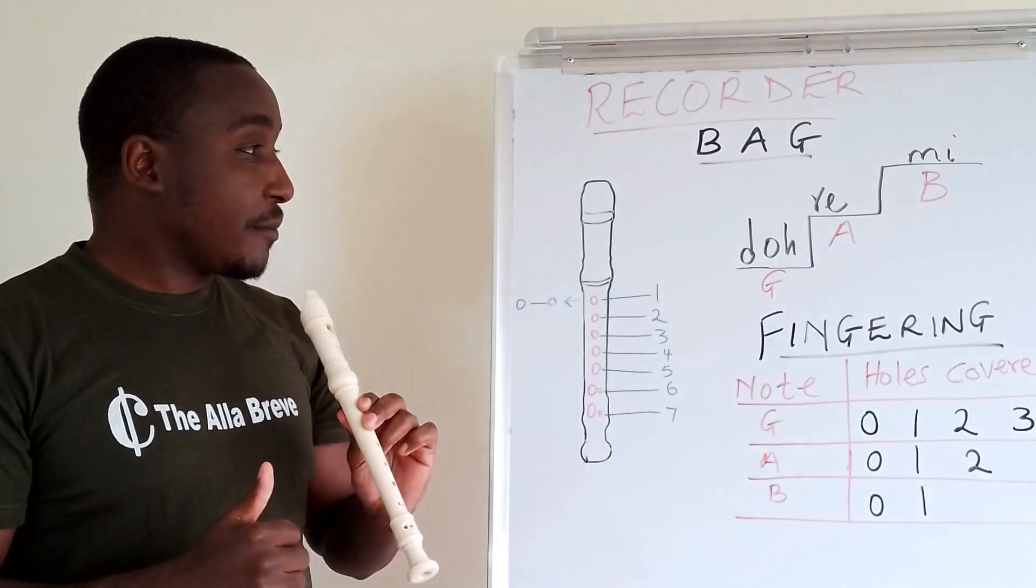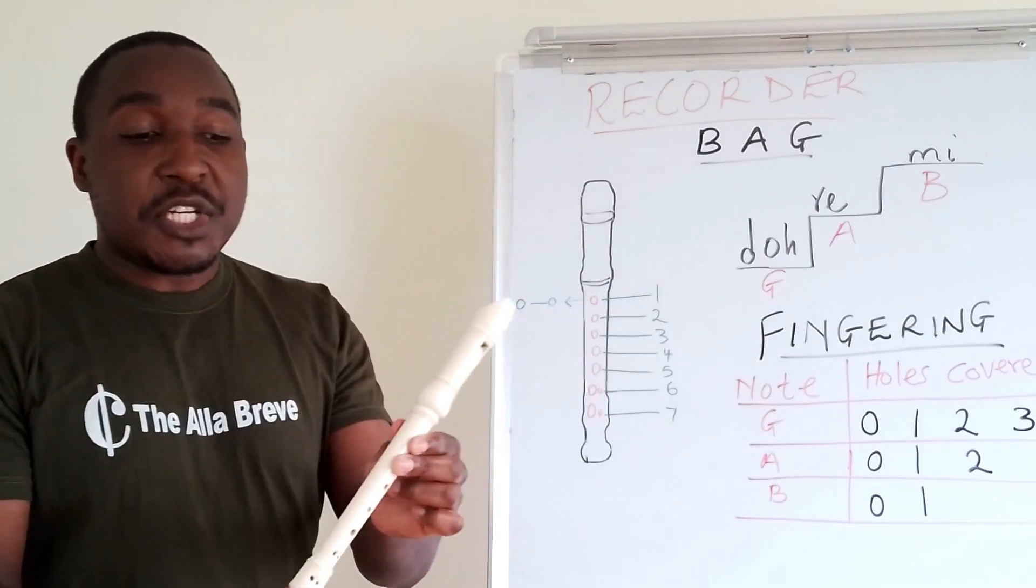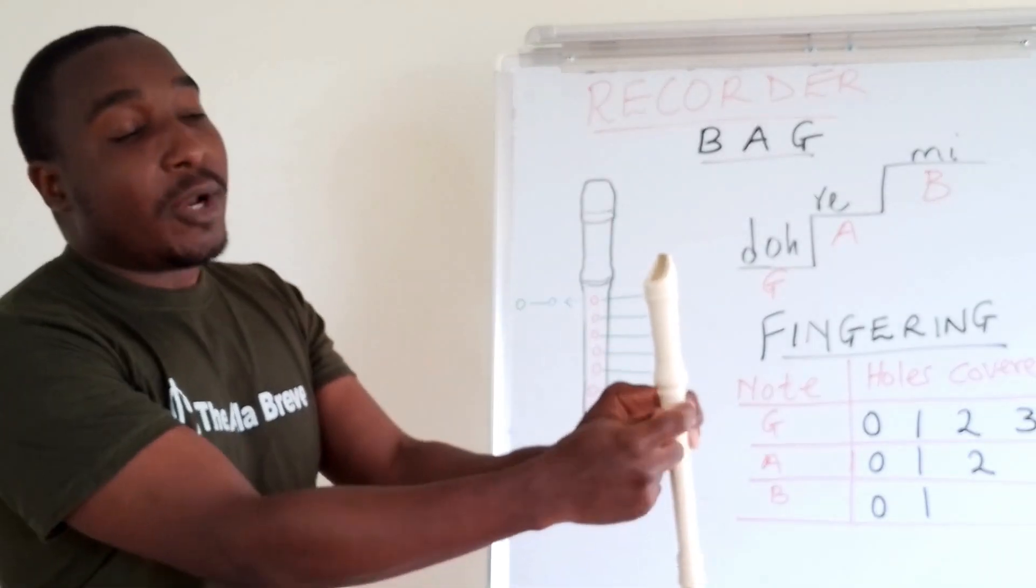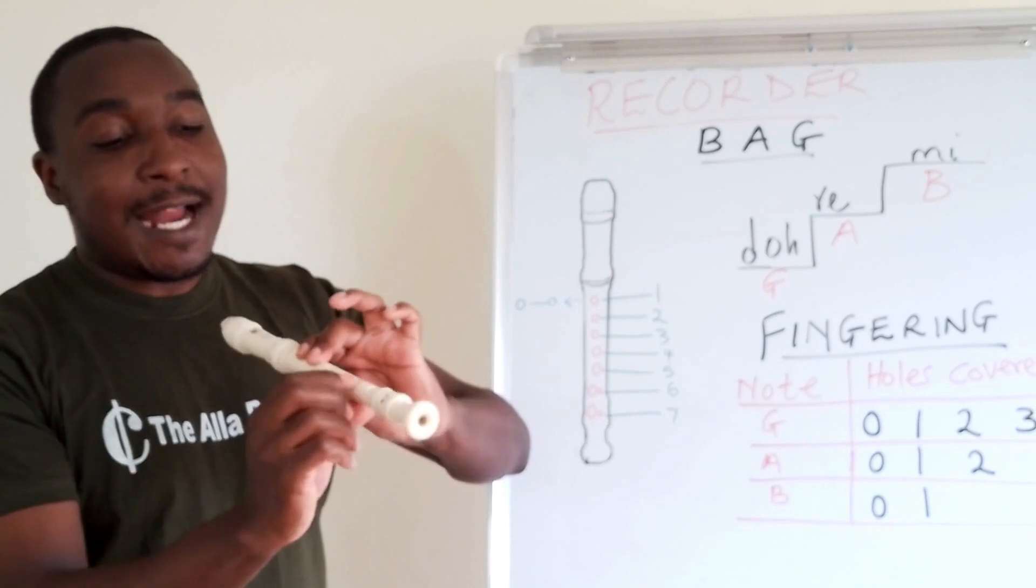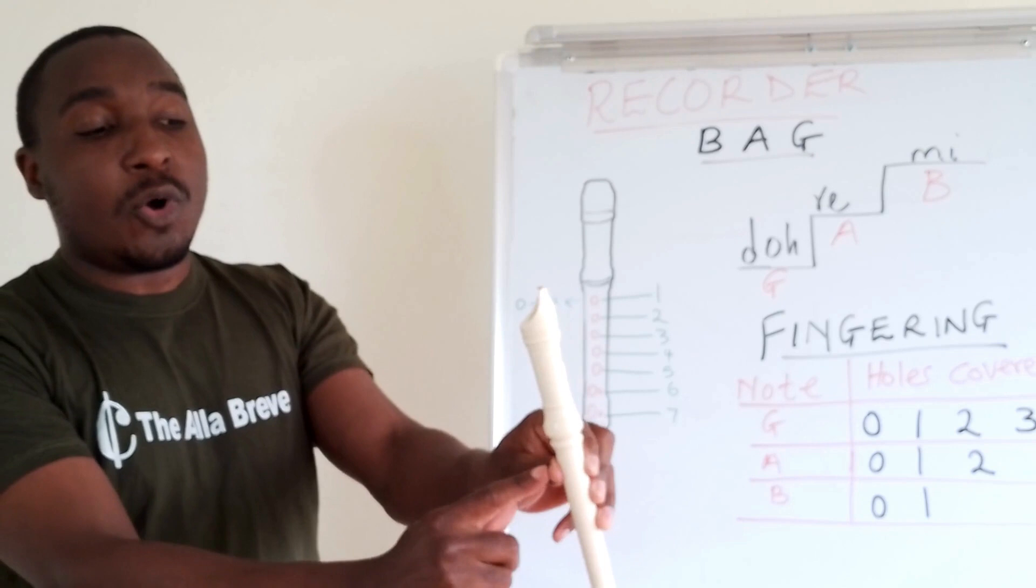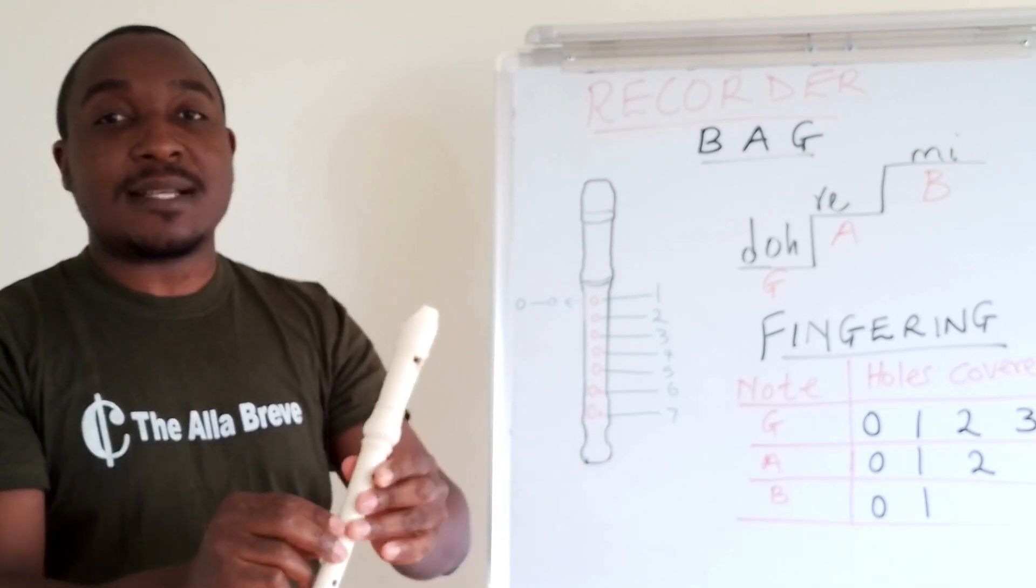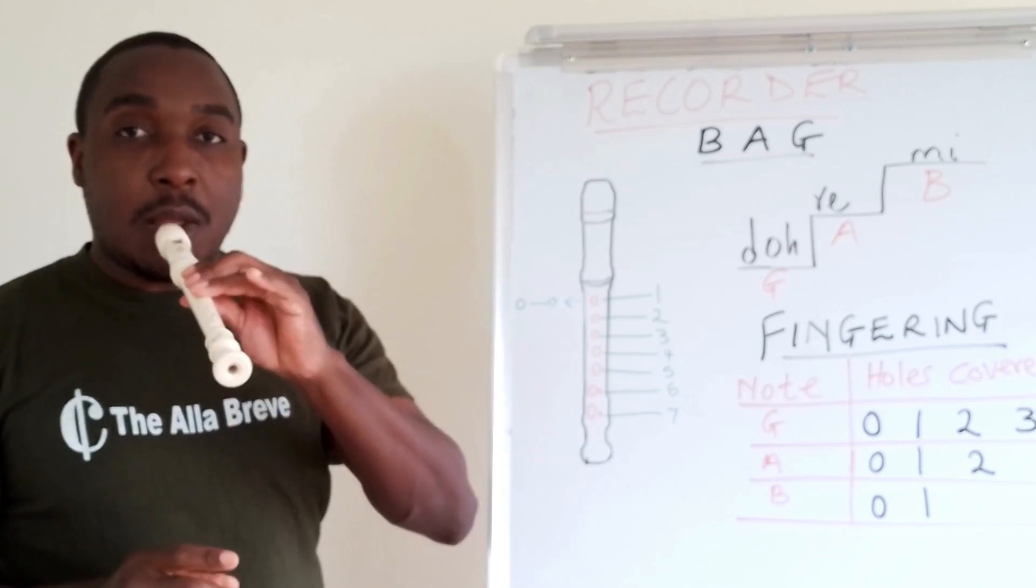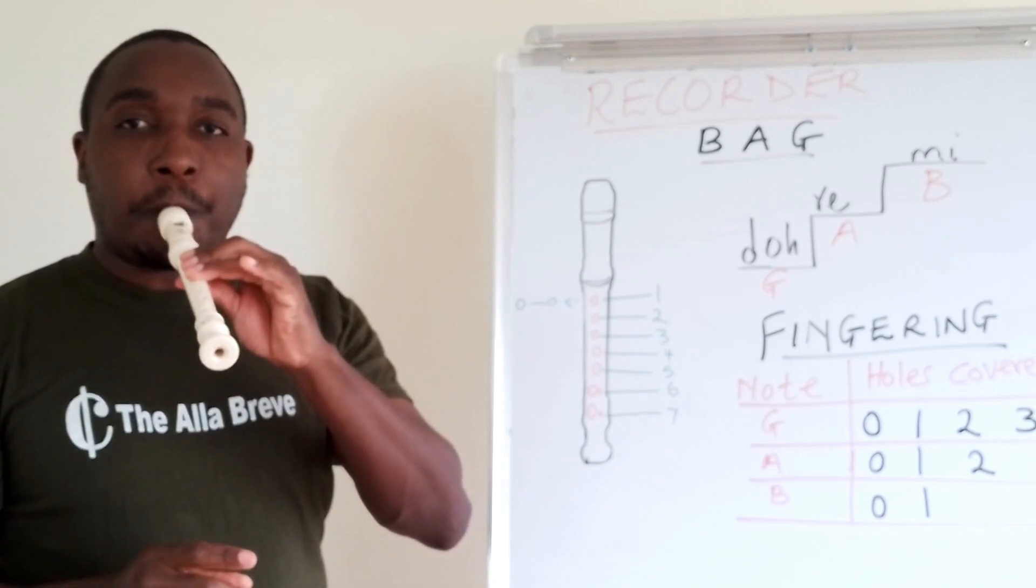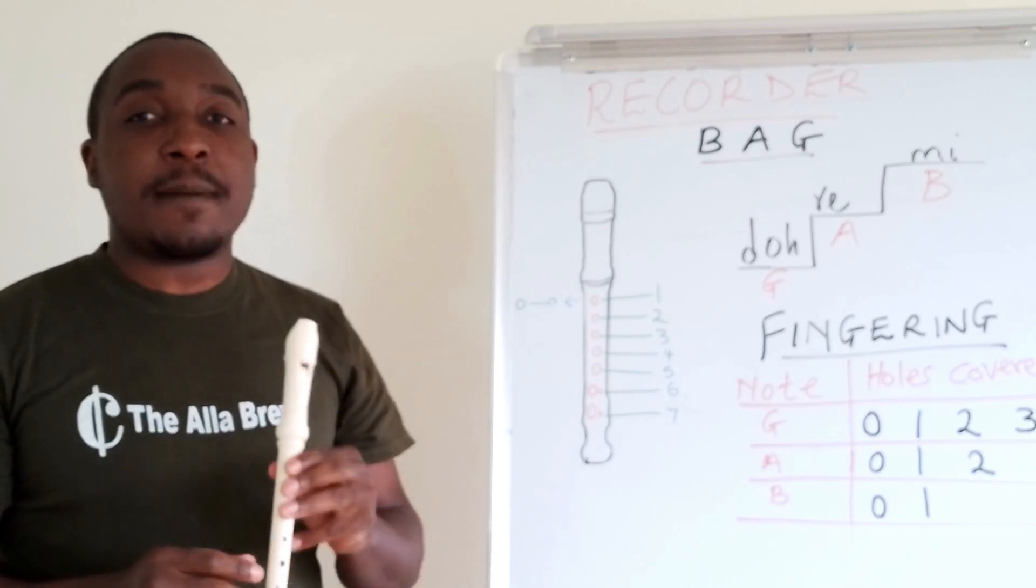Well, the next NOTE is NOTE G. What we do, while still holding NOTE A position, add the middle finger of the left hand. So, you are covering 0, 1, 2 and 3. And this is NOTE G. One more time.